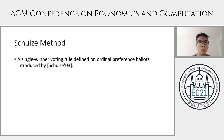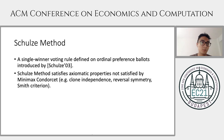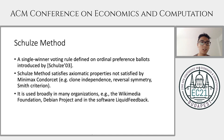The Schultz method is a single-winner voting rule defined on ordinal preference ballots, and it was introduced by Schultz back in 2003. It was introduced by modifying the min-max voting rule, because the min-max voting rule does not satisfy some important properties. But the Schultz method does satisfy these properties, such as clone independence, reversal symmetry, and the Smith criterion. Nonetheless, the Schultz method is used broadly in many organizations.